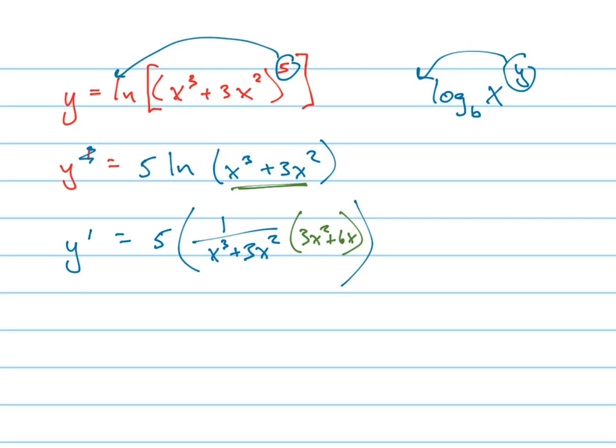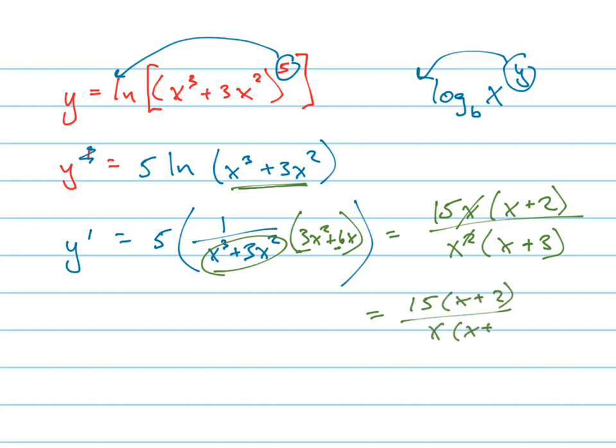Now you can simplify that even further. So the 5's on the top, and the 3, I'm going to take a 3x out. So this is really 15x on the top. 5 times 3x is 15x. And then you're left with an x plus 2. See how I simplified that? And then on the bottom, I can take an x squared out. And you're left with x plus 3. And now I can cancel one of the x's out. So 15 times x plus 2 over x times x plus 3 is your answer.